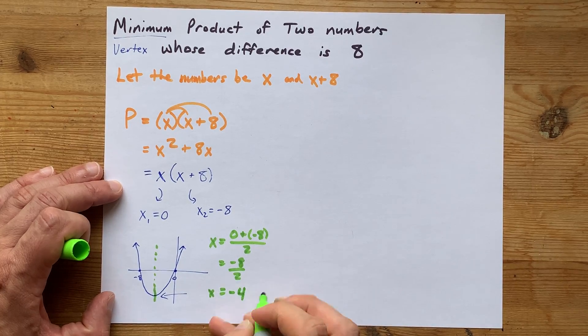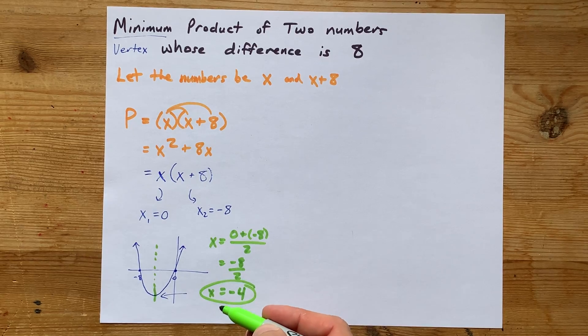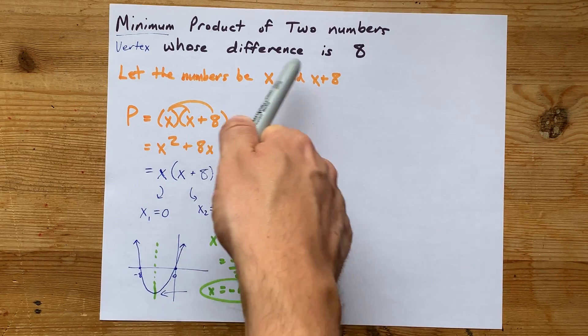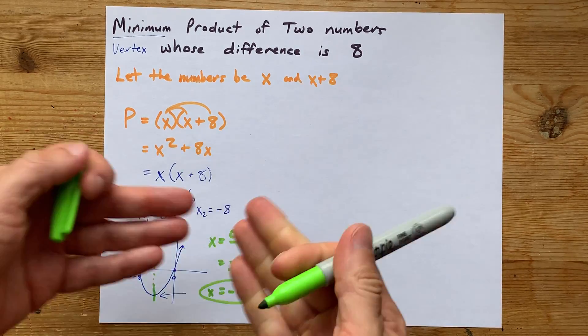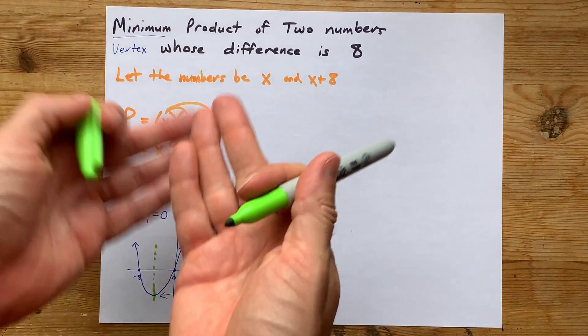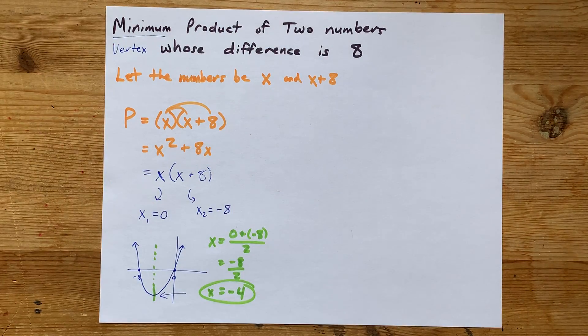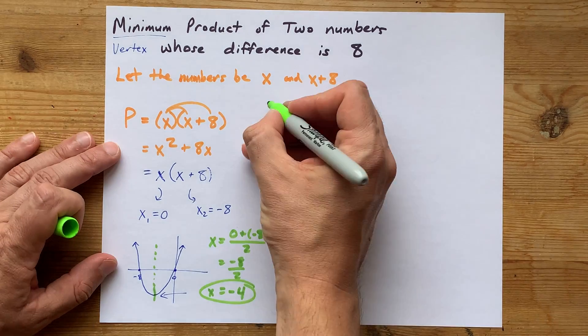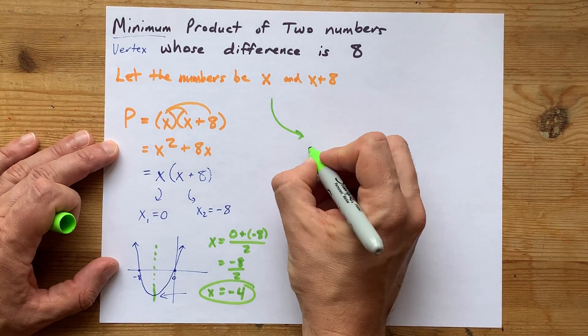You get negative 4. So negative 4 is the value of x that these numbers represent in order for them to have the smallest product or minimum product possible. So, once you've solved that x is negative 4,